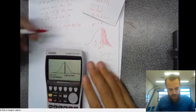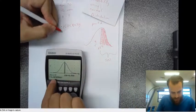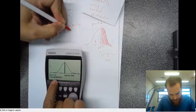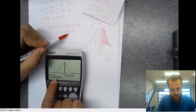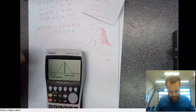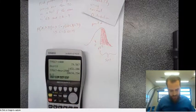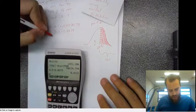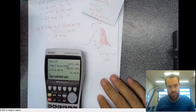It says the probability of that happening is 0.0879 — always try to go to four decimal places. Then I can just do the maths: 0.5 minus 0.0879, and I get 0.4121.